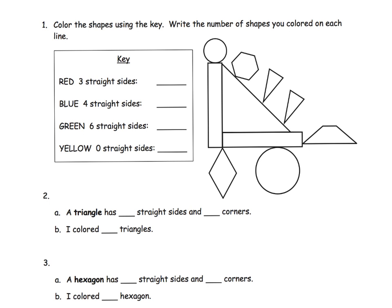Alright. So, our directions: color the shapes using the key. So if it has three straight sides, it's going to be colored red. So let's see, three straight sides. Well, there and there. Do we have any other threes? Yeah, actually if we wanted to call this a three. There you go. Boom, boom, boom.